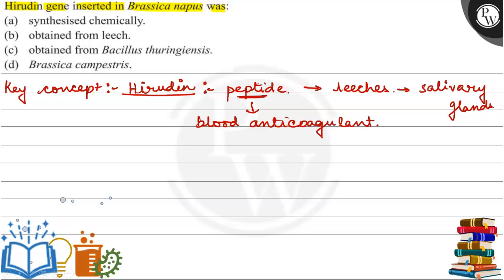Hirudin has blood anticoagulant properties. Brassica napus is basically a bright yellow flowering plant — it belongs to the cabbage family. This plant is where the Hirudin gene is inserted. The Hirudin peptide functions as a blood anticoagulant.